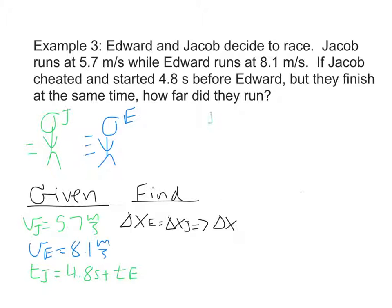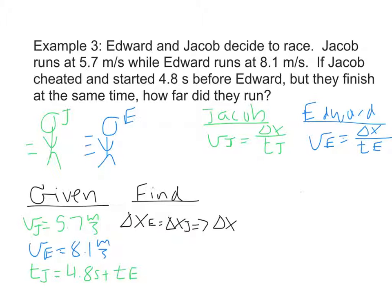So let's start by looking at each runner individually. For Jacob, we know that his speed will equal the distance over the time. And we know that for Edward, speed for Edward equals delta X over the time it takes him to run. I know already what VJ and VE are. I know that these delta X's are equal to each other, and I have time for Jacob in terms of time for Edward. So although I have two unknowns, I have two equations, so it's going to be easy enough to solve.